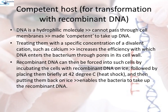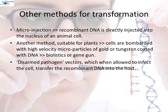This is not the only way to introduce alien DNA into host cells; there are many different methods for transformation. In microinjection, recombinant DNA is directly injected into the nucleus of an animal cell. For plants, cells are bombarded with high-velocity microparticles of gold or tungsten coated with DNA, in a method known as biolistics or gene gun. Another method uses disarmed pathogen vectors which, when allowed to infect the cell, transfer the recombinant DNA into the host cell.